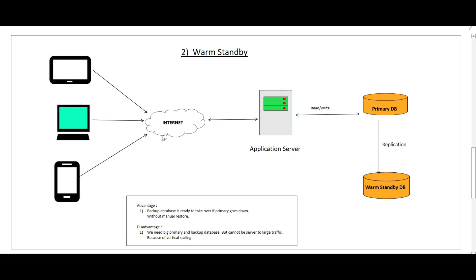The next failover strategy is warm standby. Traffic flows from devices through the internet to the application server and to a single primary database serving all read/write requests. In this case, we replicate data to a second database called the warm standby DB. The replication strategy can be synchronous, asynchronous, or semi-synchronous. If the primary database goes down, the warm standby is already in sync and we can directly route traffic to it.